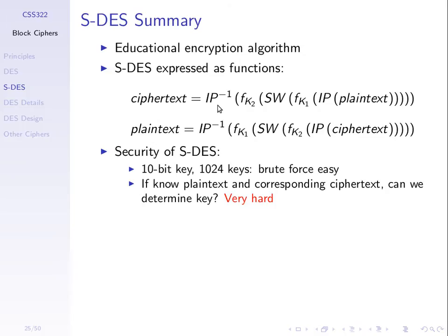If you look at the decryption, it can be written similarly: take the ciphertext, apply IP, apply our function with K2, swap the halves, apply the same function with K1, then inverse initial permutation. The encryption and decryption are the same operations — the only difference is the input and the order in which we use the keys. That's a nice feature: when encrypt and decrypt operations are the same, we can use the same code and hardware to implement it.